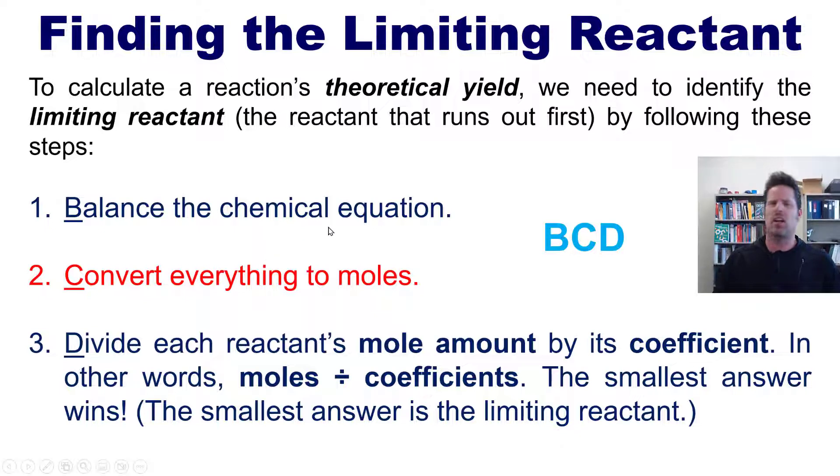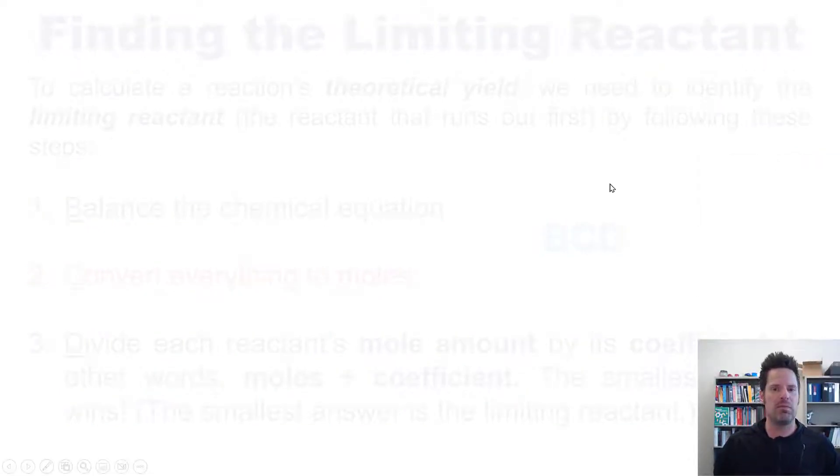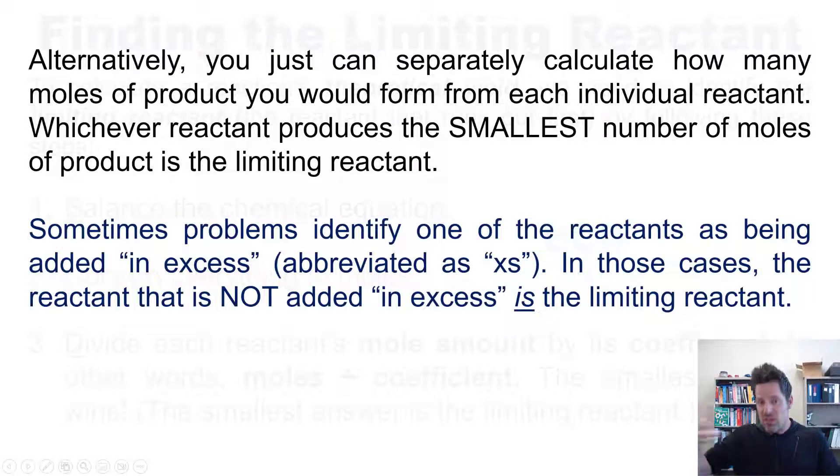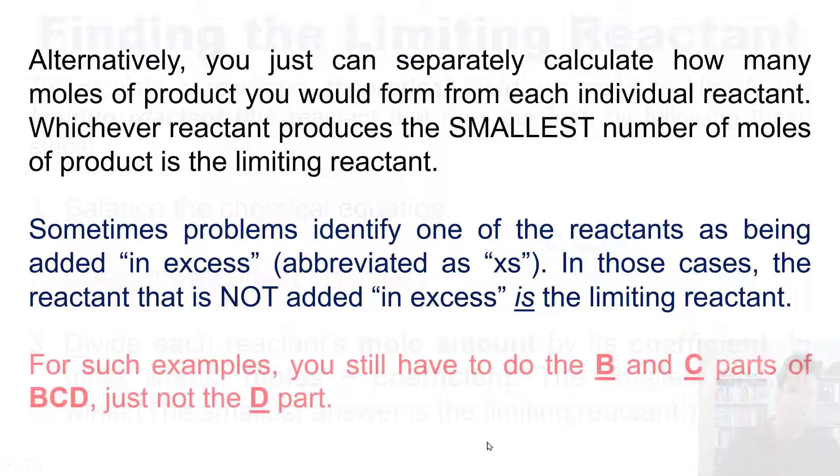Now, if you don't like BCD, there is an alternative way of being able to identify the limiting reactant. In this way, you can just separately calculate out how many moles of product you would form individually from each of the reactants. When you do this, whichever reactant produces the smallest number of moles of product is the limiting reactant. Now, just so you know, sometimes problems will identify in their wording one of the reactants as being added in excess, which occasionally is abbreviated with the letters XS for short. In such cases, the reactant that is not added in excess is your limiting reactant. So you do not have to go through the full BCD process in order to identify your limiting reactant because you already know what it is. However, even in such examples, you still do have to do the B and C parts of BCD, just not the D part. In other words, you do have to balance your chemical equation and you have to convert everything to moles.